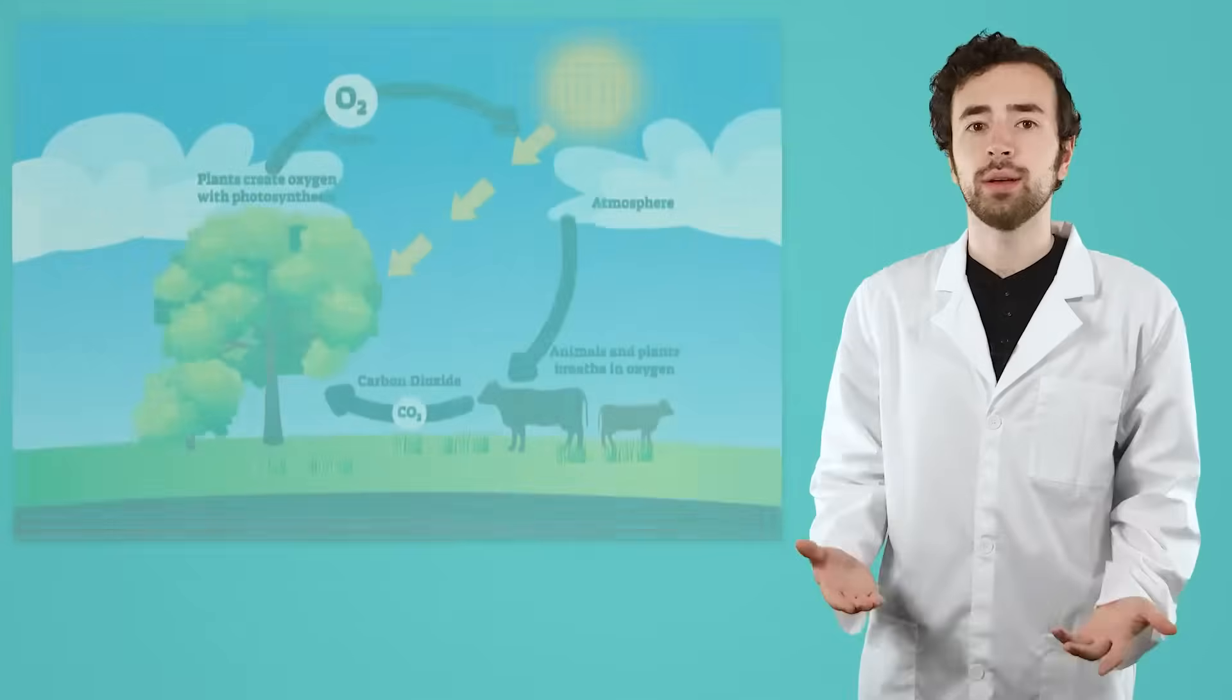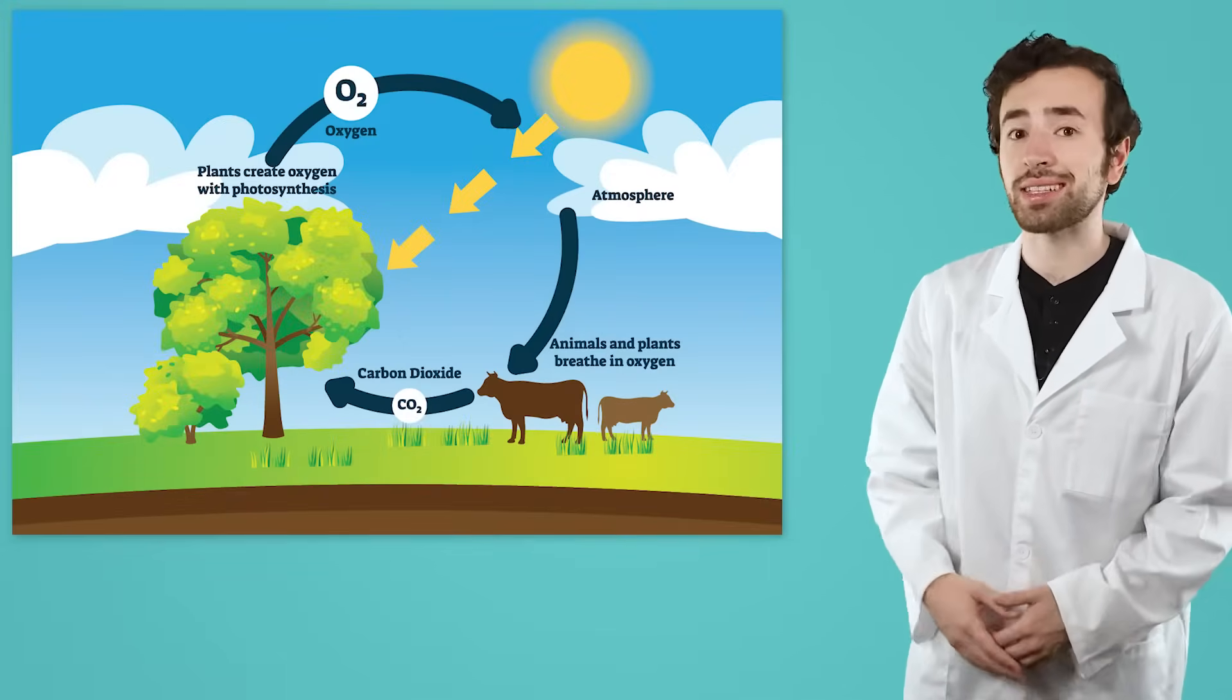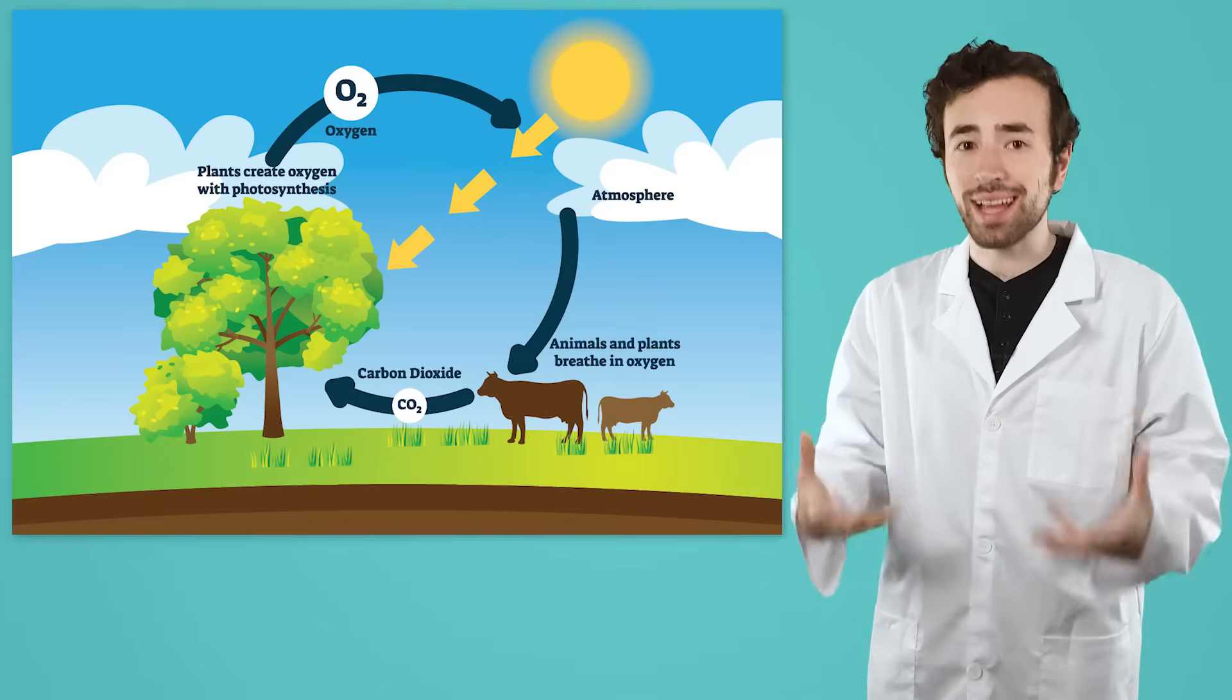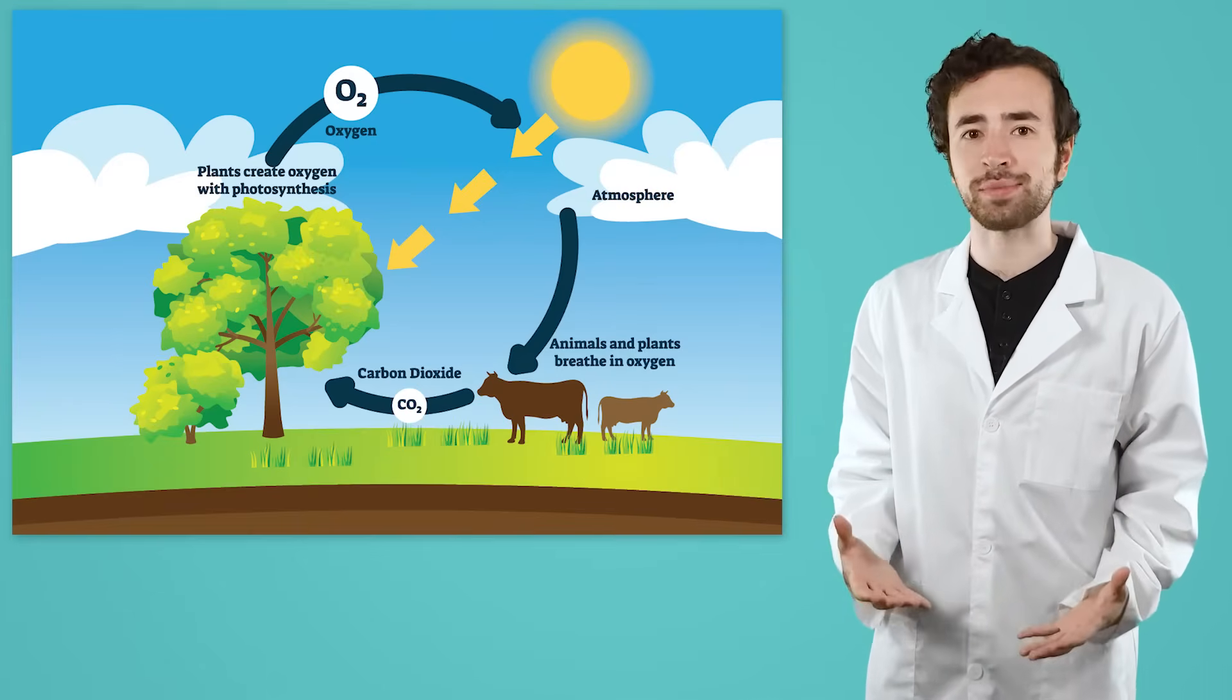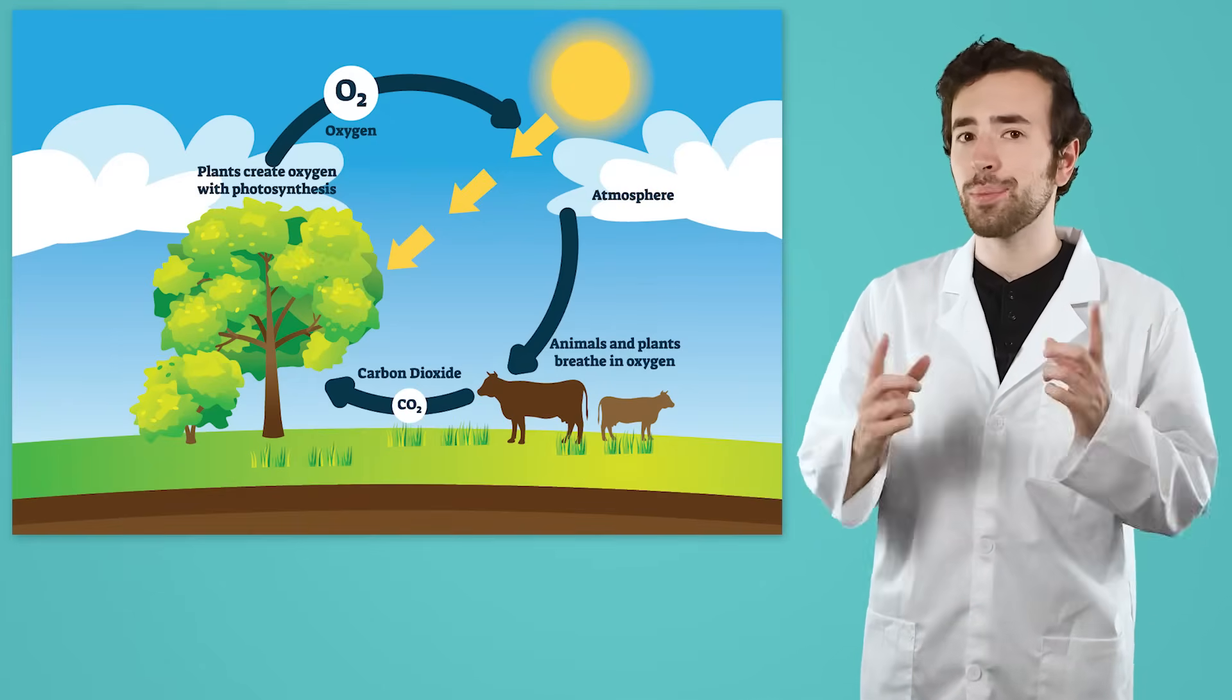While many natural resources are renewable because they can be replaced as they're used, like animals and trees, others are renewable because their supply naturally cycles, like air and water. The nitrogen, oxygen, and carbon dioxide in the air each cycle through the world's ecosystems, being used and replaced back into the air.